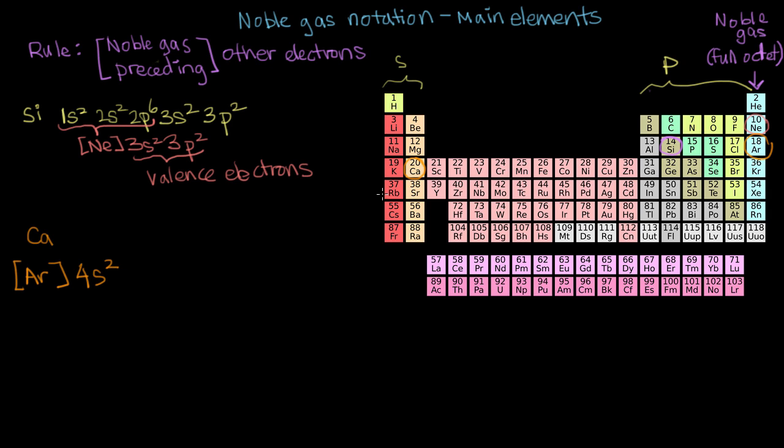So does calcium have a full octet? And we know that these are the valence electrons, and we also know that if it did have a full octet, it would actually already have a noble gas configuration. So it would either have krypton or argon. And in this case, it turns out that calcium prefers to lose two electrons as opposed to gaining a bunch.